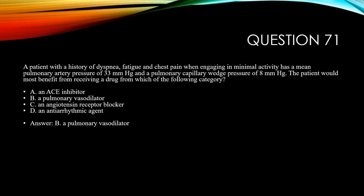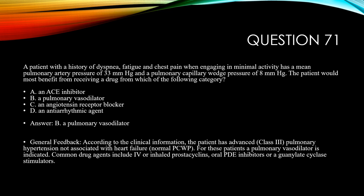The correct answer is B, a pulmonary vasodilator. According to the clinical information, the patient has advanced class III pulmonary hypertension not associated with heart failure (pulmonary capillary wedge pressure is normal at 8). For these patients, a pulmonary vasodilator is indicated. Common drug agents include IV or inhaled prostacyclin such as Flolan, or oral pulmonary vasodilators and guanylate cyclase stimulators.